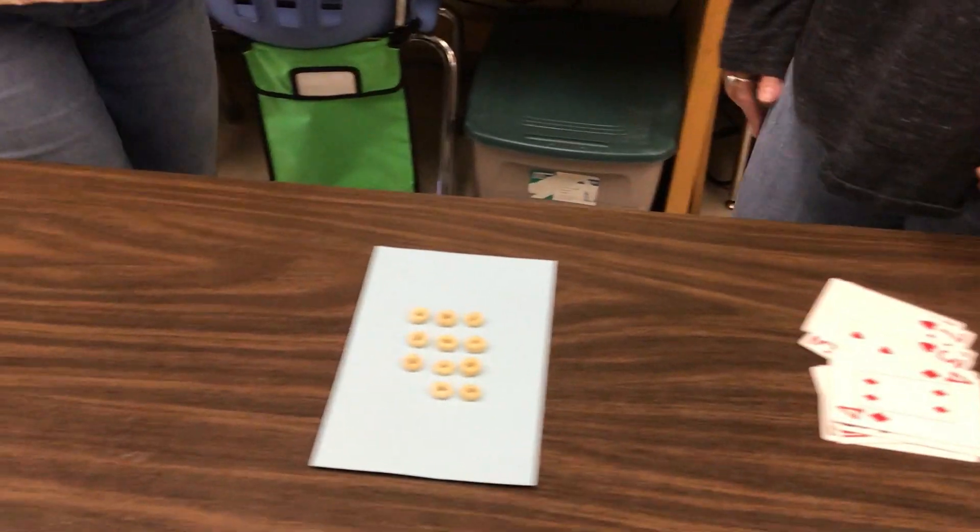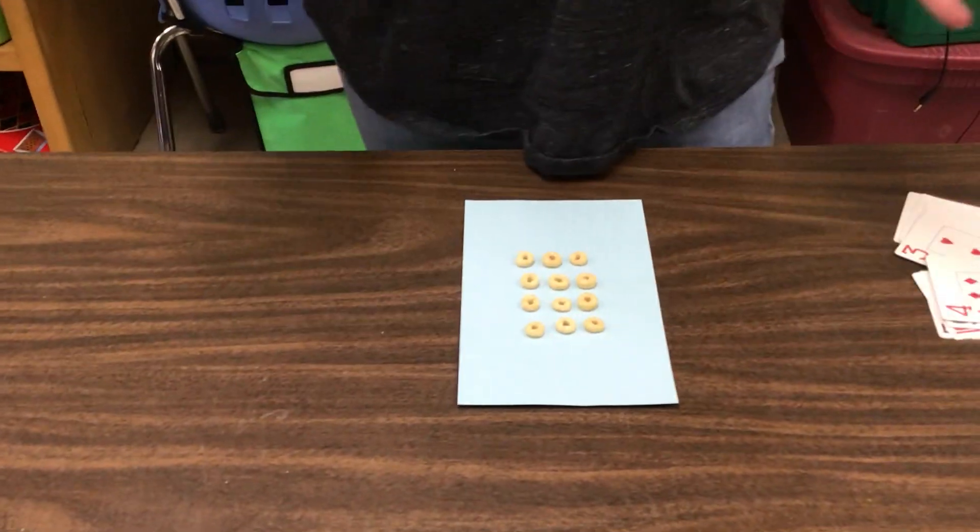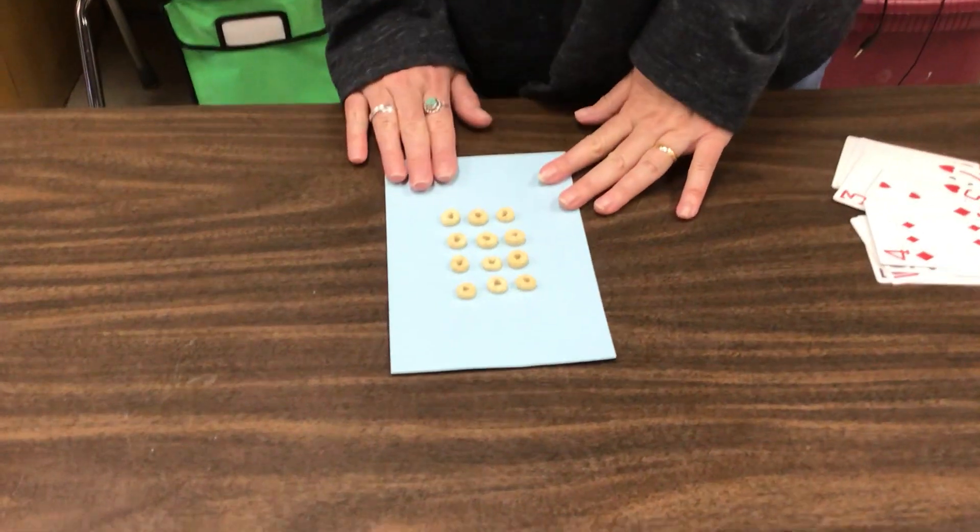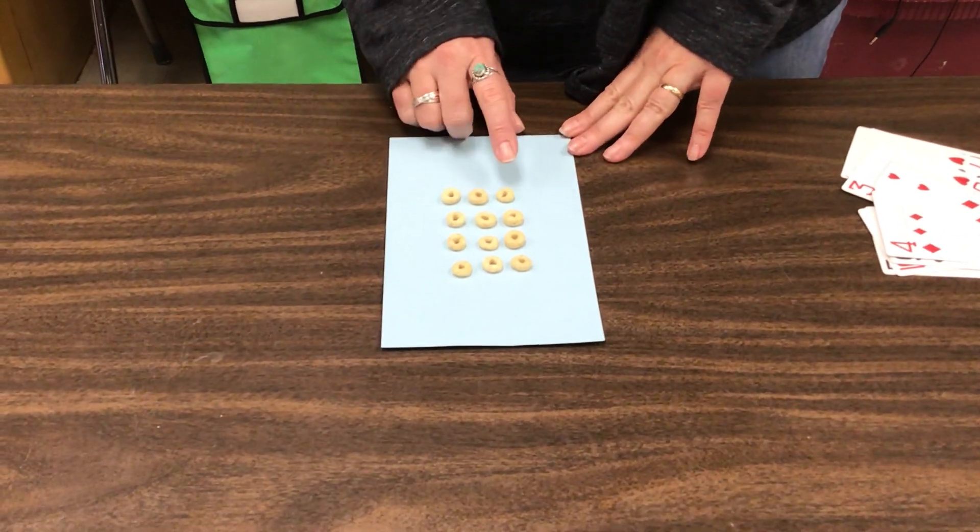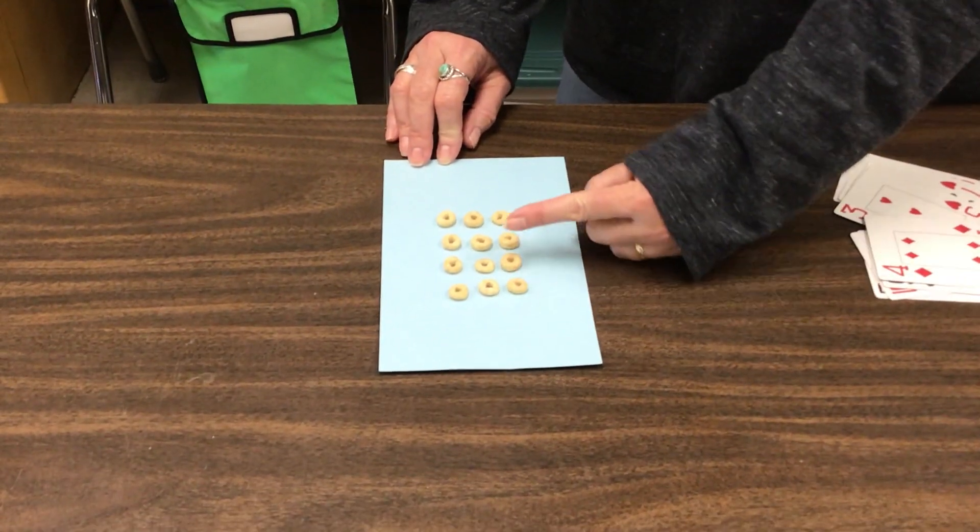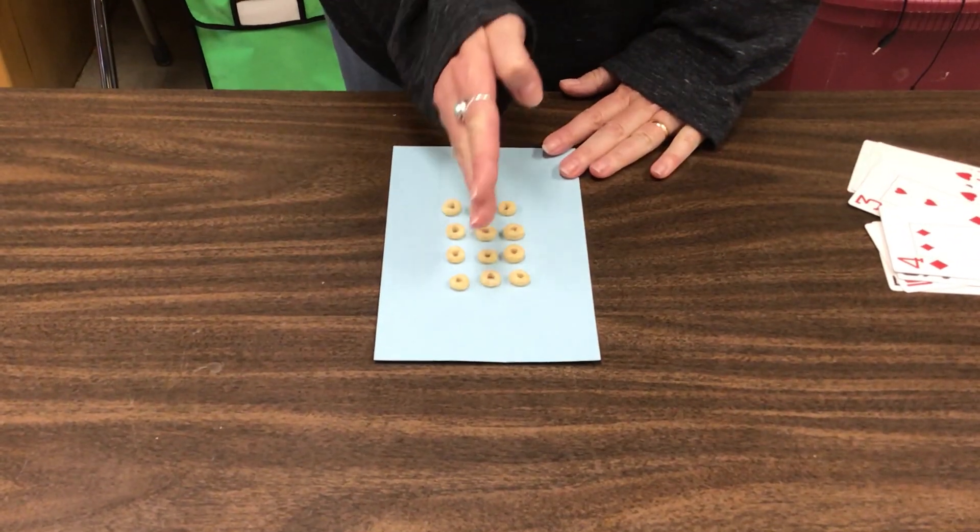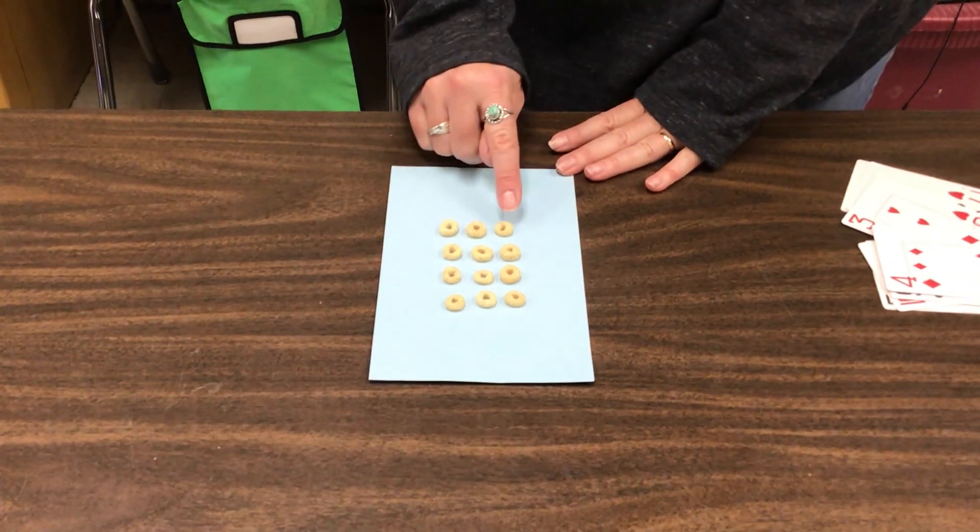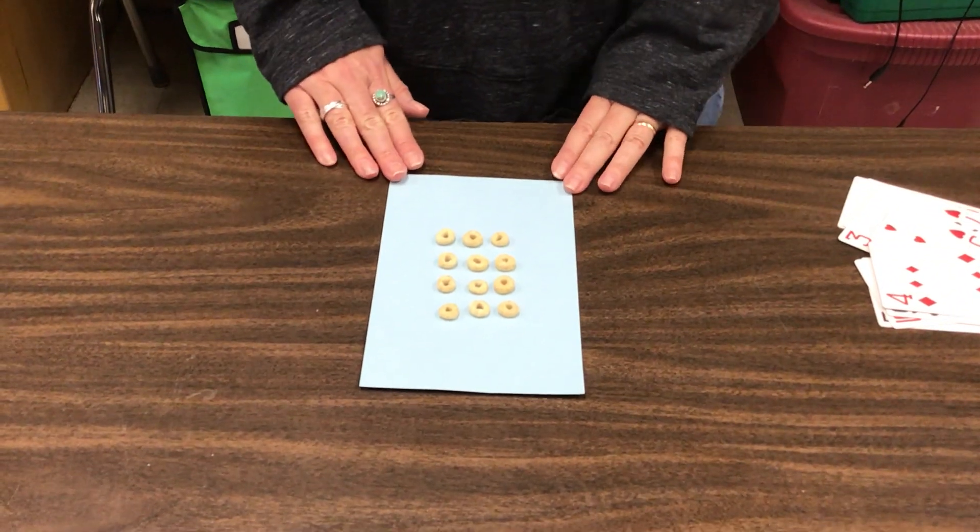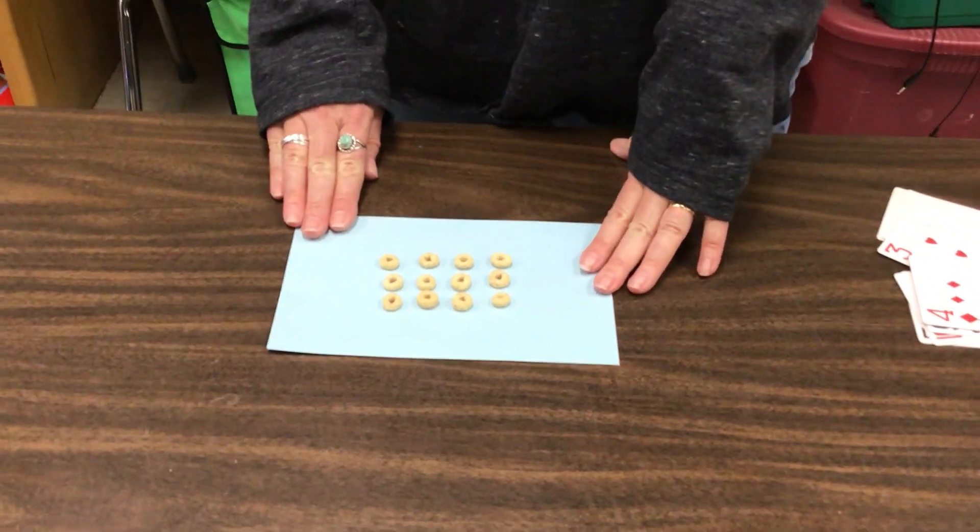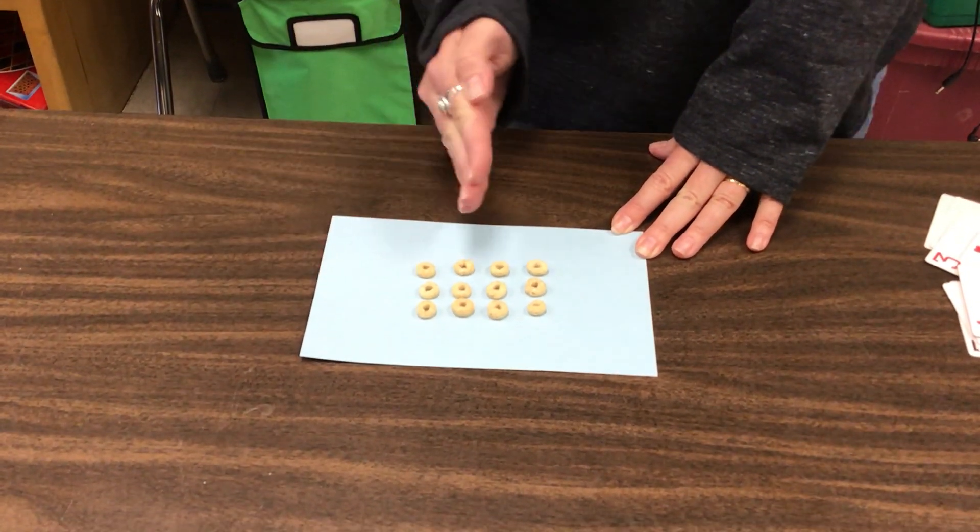Another thing you could use at your home is you could use cereal, beans, pennies, all kinds of things to make arrays to practice your facts. You could do rows and columns. We've got one, two, three, four rows and three columns, and four times three is... one, two, three, four, five, six, seven, eight, nine, ten, eleven, twelve. Four times three is twelve. If you look at it this way, you're still going to get four times three is twelve, but you have three rows with four columns, and three times four is twelve.